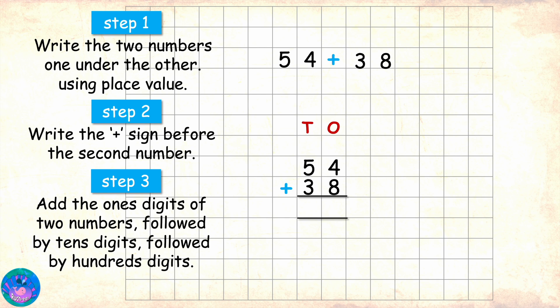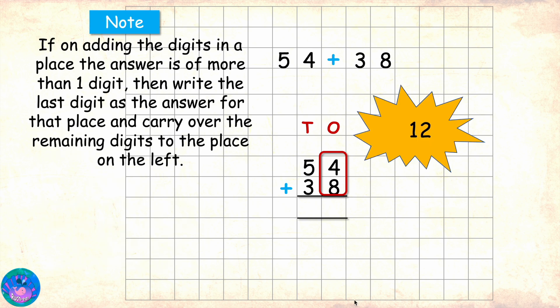Starting with ones place. We have 4 and 8. 4 plus 8 equals 12, which is a two-digit number. Now, following the rule, I will write the last digit of 12, which is 2, as the answer for ones place and carry forward the remaining digit 1 to the tens place.